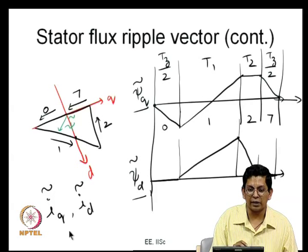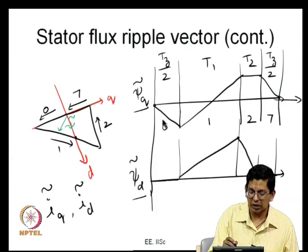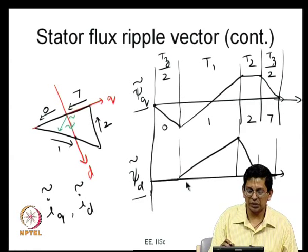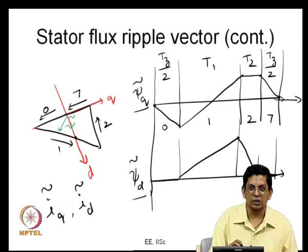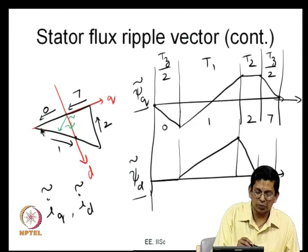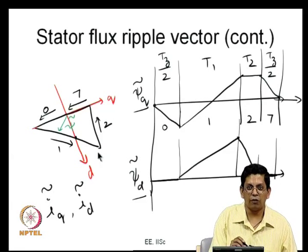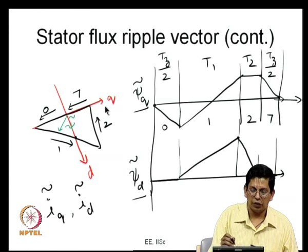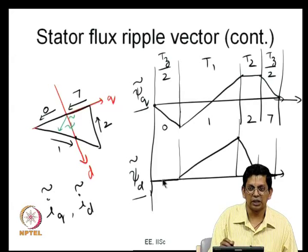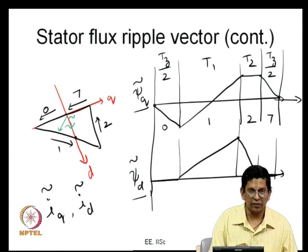The ripple starts and ends at 0 for both components over each sub-cycle. The d-axis ripple does not change whenever the null vector is applied. By aligning the q-axis with the reference vector, the reference vector has no component along the d-axis, so V_d_tilde = 0 during null vector intervals — making the calculation simpler.